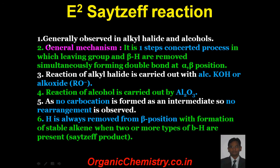E2 is of two types: E2 Zaitsev or E2 Hoffman. In E2 Zaitsev, generally observed in alkyl halides and alcohols, the mechanism is a one-step concerted process in which the leaving group and beta hydrogens are removed simultaneously, forming a double bond at alpha and beta position. Reaction of alkyl halide is carried out with alcoholic KOH or alkoxide — that is, a strong base is used in case of E2 reaction.